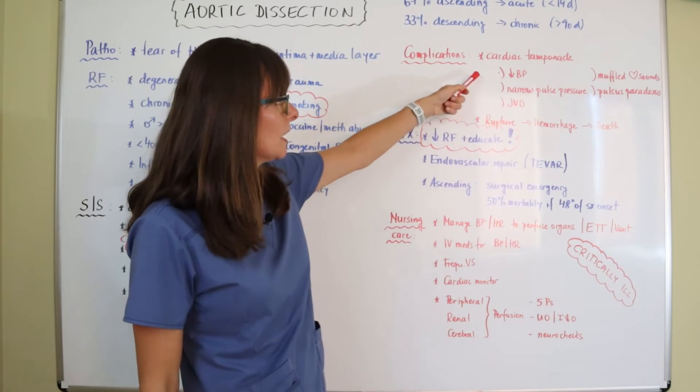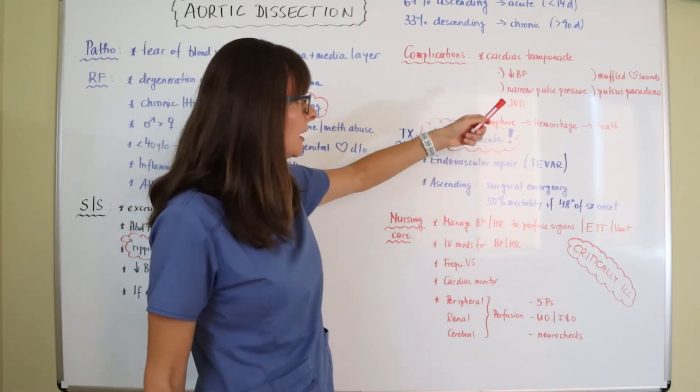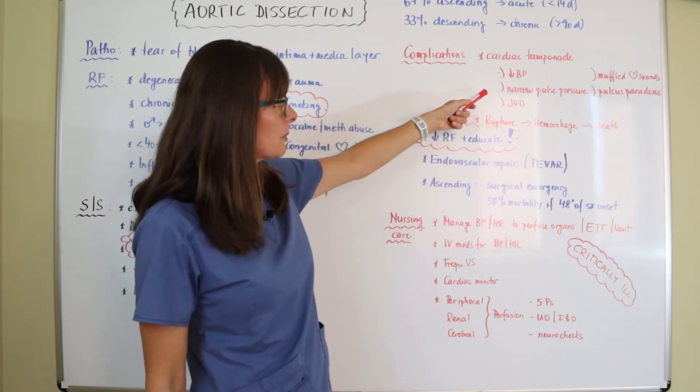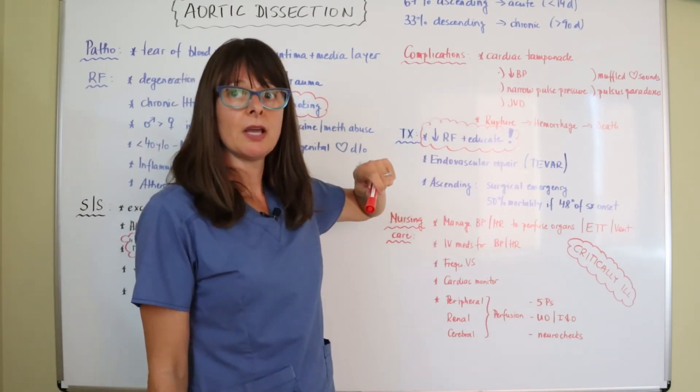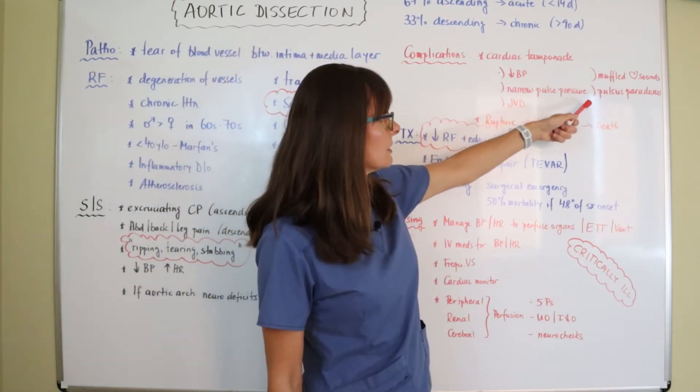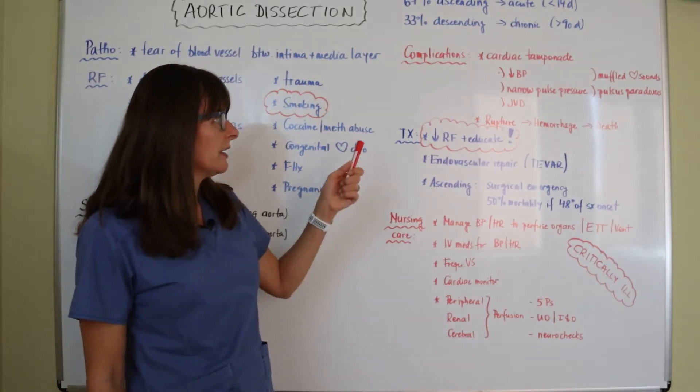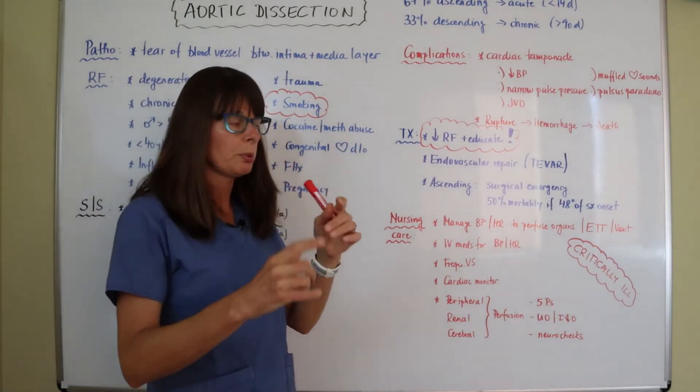And signs and symptoms here would be a decreased blood pressure because the heart muscle cannot expand. There will be a narrowed pulse pressure. There might be some JVD as that blood is starting to back up. The patient might have muffled heart sounds as well as pulsus paradoxus.